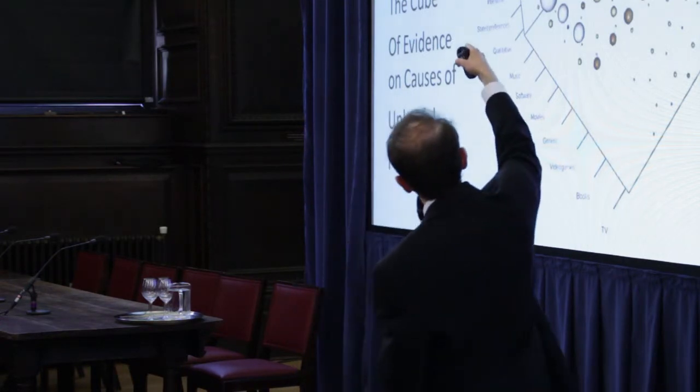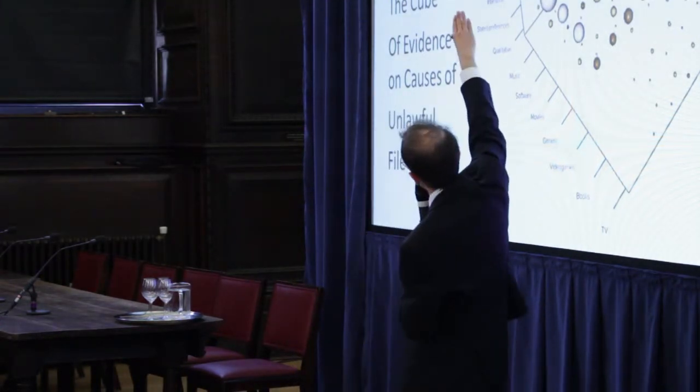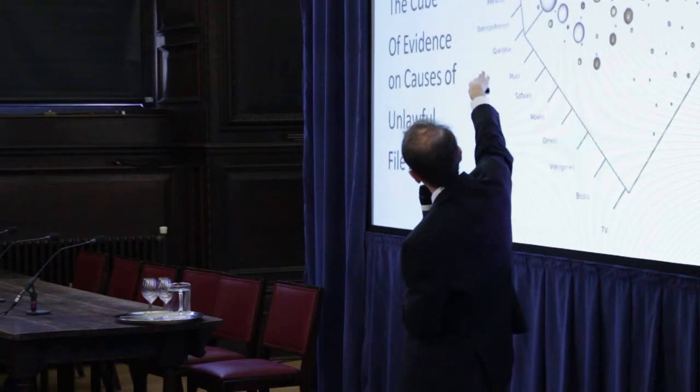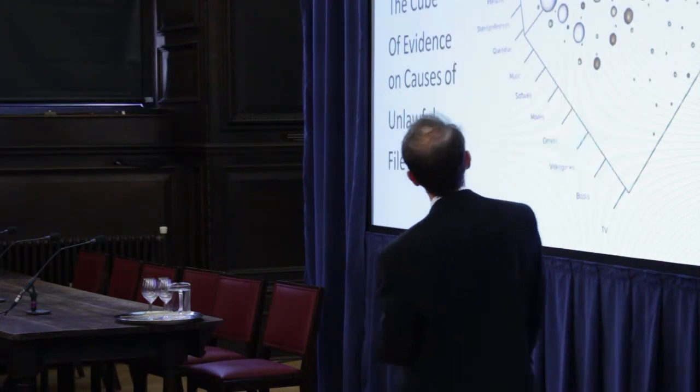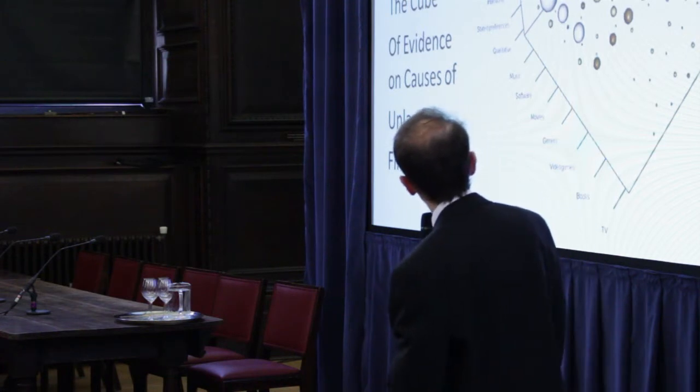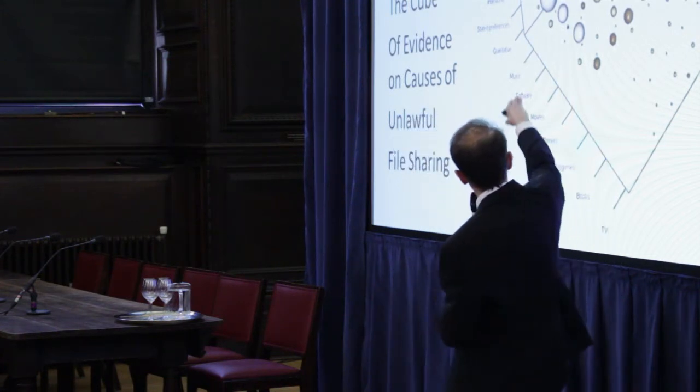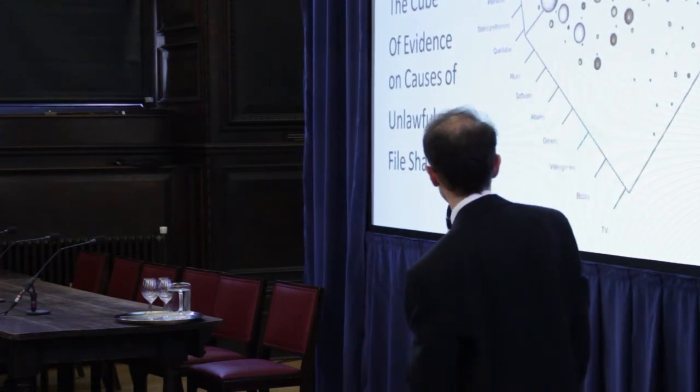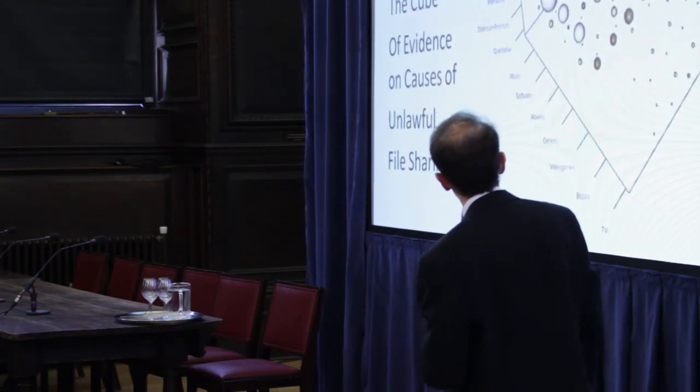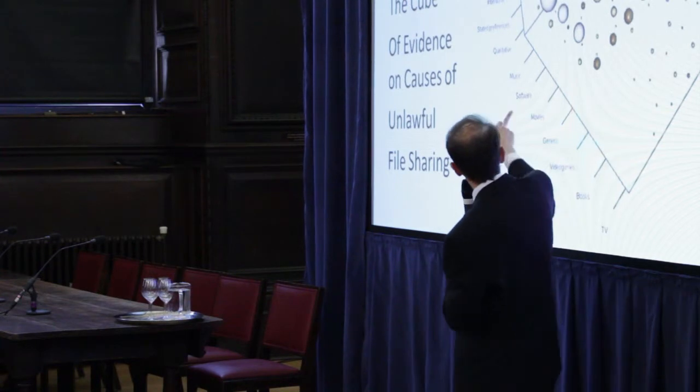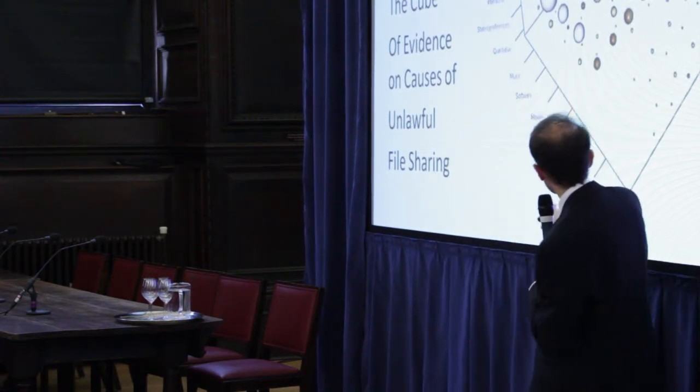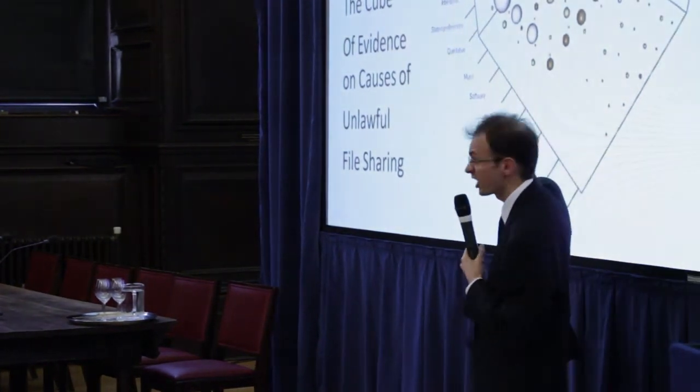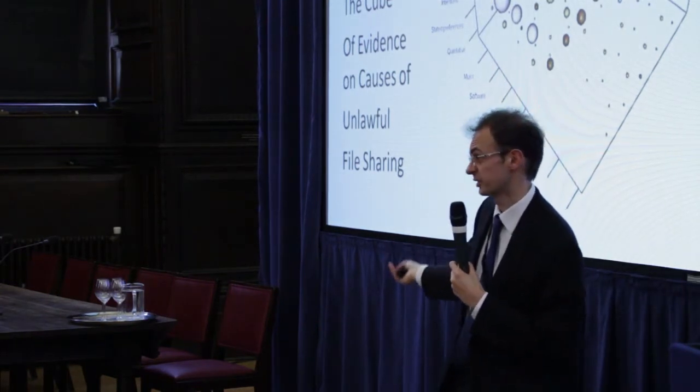This cube has got three dimensions. One dimension is the type of source of unlawful file sharing: experiential, moral, social, financial, legal, technical utility, for example. And another dimension, you have got the type of data. This is what I was talking about earlier, how close you get to observed behavior. And then on another dimension, that's this dimension over here, you get the industry: music, software, movies, video games, books, TV, or generic. We simply couldn't tell from the study.